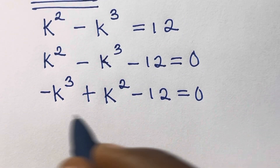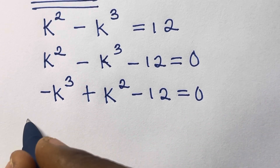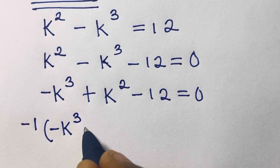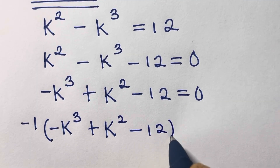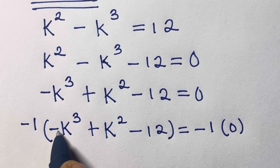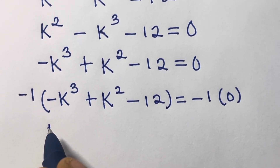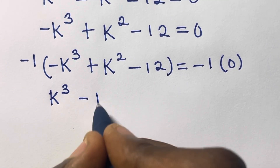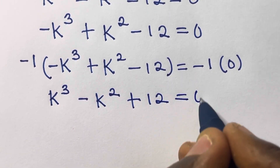From here, what we are going to do is multiply throughout by minus 1. So we have minus 1 times the expression: minus k raised to power 3 plus k squared minus 12 equals minus 1 times 0. Multiplying out, minus 1 times minus k cubed gives k cubed, then minus k squared plus 12 equals 0.